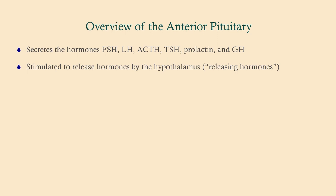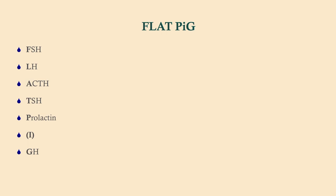The anterior pituitary secretes several hormones, and these hormones are kind of intermediaries — they don't really do anything directly to the body's physiology; they stimulate other organs to release hormones. A good example is TSH: it doesn't really affect the body directly, but it tells the thyroid to release T3 and T4. The release of these anterior pituitary hormones is under the control of the hypothalamus via releasing hormones. The mnemonic to remember the anterior pituitary hormones is FLAT PIG. There are also two hormones from the posterior pituitary: oxytocin and ADH, which we'll discuss in another talk.